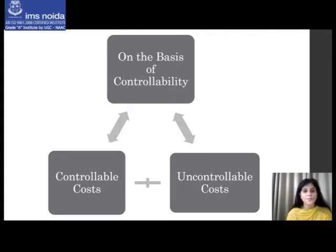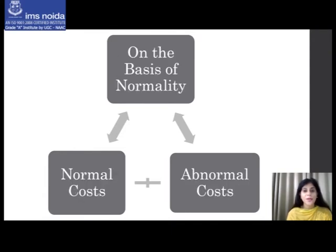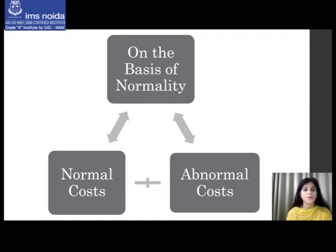Next, classification by normality: costs may be categorized as normal cost and abnormal cost. Normal cost is the cost which is normally incurred at a given level of output under the conditions in which that level of output is normally attained. Abnormal cost is not normally incurred at a given level of output under normal conditions and is charged to the profit and loss account.